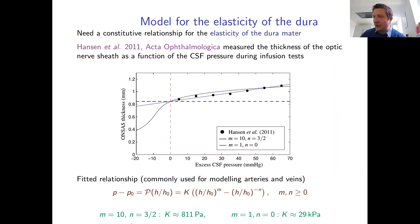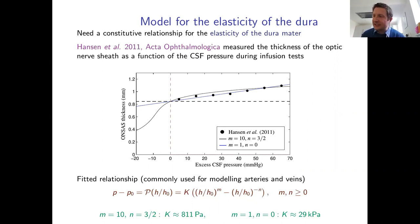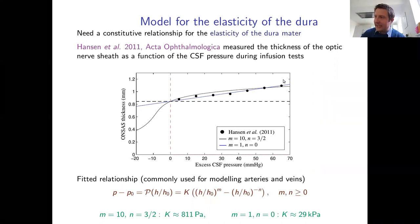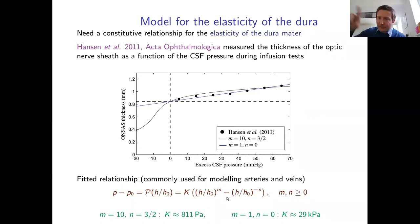The channel law has the form: excess pressure proportional to (h/h₀)^m minus (h/h₀)^(-n), where m and n are exponents. The simplest choice is a linear function with m=1 and n=0. Fitting this to Hansen's data gives a dura mater stiffness of approximately 29 kPa. However, a linear law is probably inappropriate at larger CSF pressures in the traumatic regime, where the dura cannot expand indefinitely.